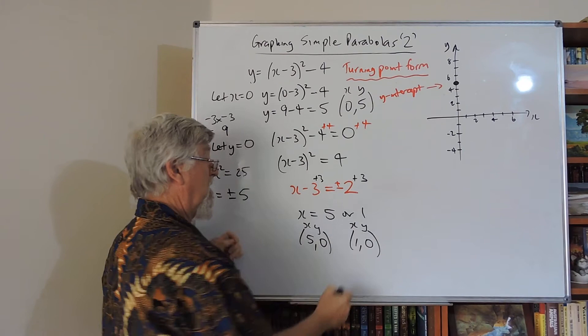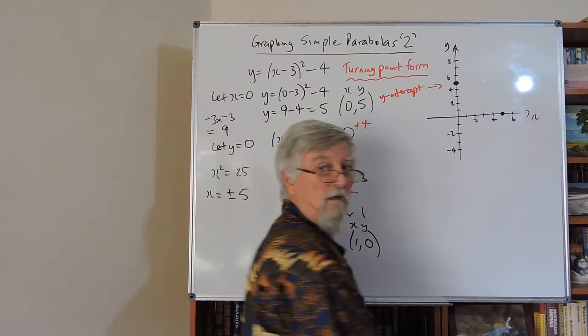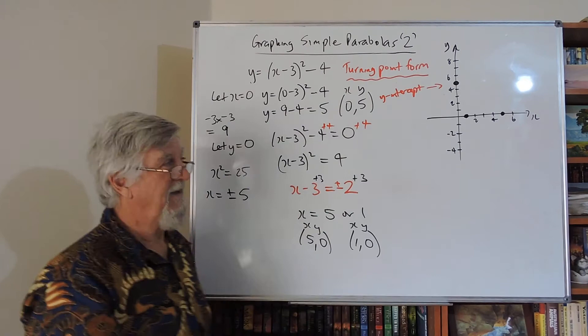If I go over to my graph, I have a dot at 5, 0. So there's one at 5, 0. And I have a dot at 1, 0. So I've got a lot of my parabola already drawn.